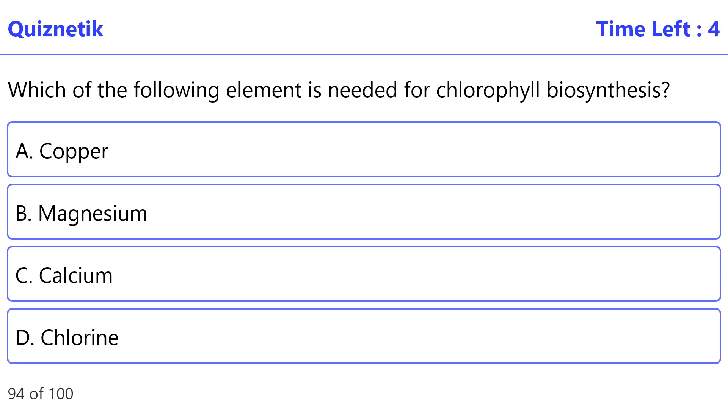Which of the following elements is needed for chlorophyll biosynthesis? The correct option is B: magnesium.